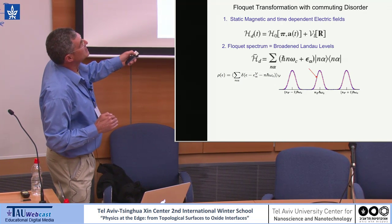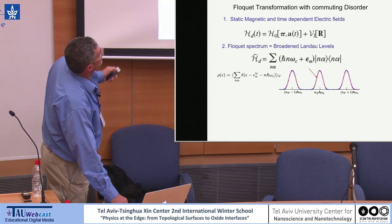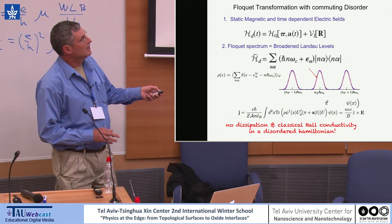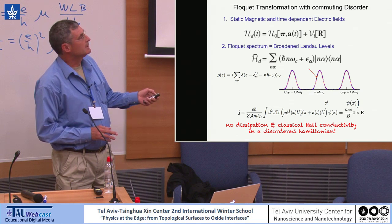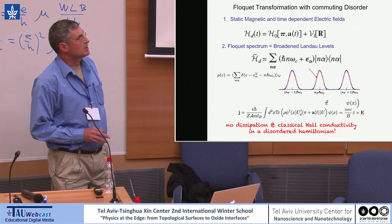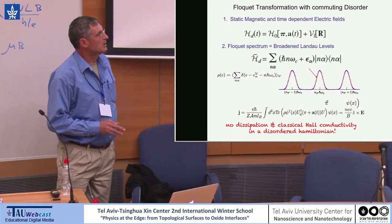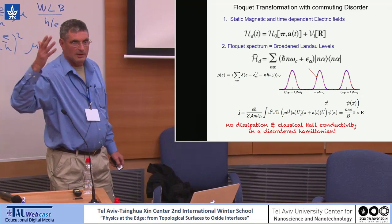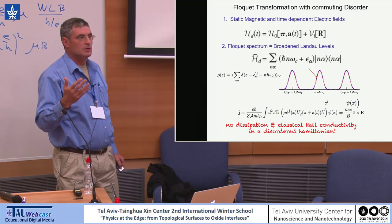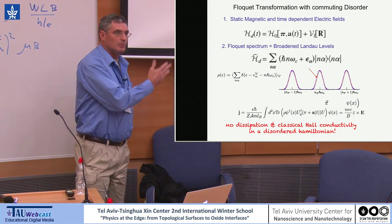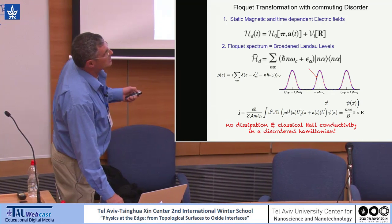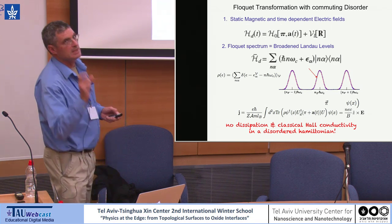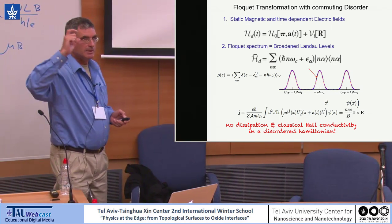If you calculate the current in this Hamiltonian with any field applied, you get a pure Hall current — no dissipative part. The Hall coefficient is just the classical value, independent of temperature and any applied fields. This is actually the only way I know to prove to classes that the classical Hall coefficient is correct even with disorder, when disorder is treated this way. Of course this is not the full story — transitions between Landau levels are not included, and these are precisely the ones that give rise to the dissipative conductivity we want to calculate.